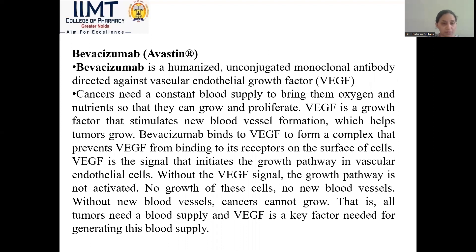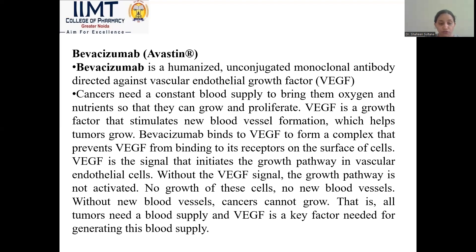Bevacizumab is a humanized, unconjugated monoclonal antibody directed against vascular endothelial growth factor, known as VEGF. Cancer needs a constant blood supply to get oxygen and nutrients to grow and proliferate. VEGF is a growth factor that stimulates new blood vessel formation, which helps the tumor grow. Bevacizumab binds with VEGF to form a complex that prevents VEGF from binding to its receptors on the cell surface. Without the VEGF signal, the growth pathway does not activate, no new blood vessels are formed, and the cancer cannot escape. VEGF is the key factor required for generation of a blood supply to the tumor.